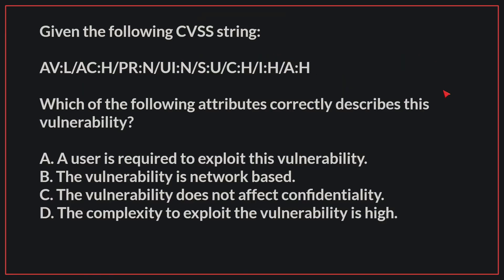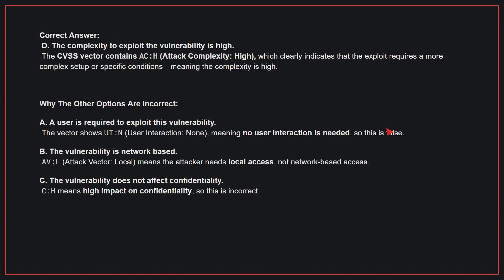Given the following CVSS string, which of the following attributes correctly describes this vulnerability? The correct answer is D: The complexity to exploit the vulnerability is high. The CVSS vector contains AC:H, which clearly indicates that the exploit requires a more complex setup or specific conditions, meaning the complexity is high.